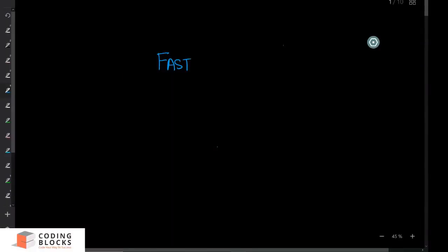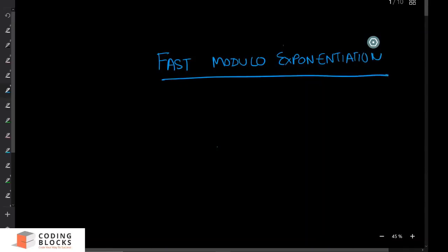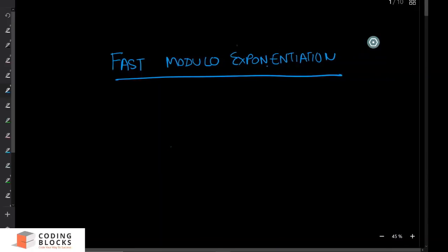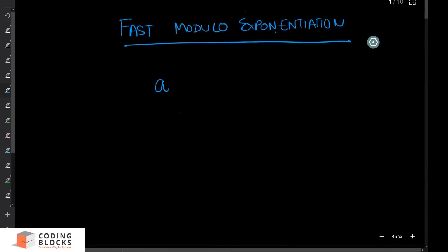In this video we are going to talk about fast modulo exponentiation, a concept used in many problems. Exponentiation basically means computing a raised to the power b, and sometimes you also need to take mod with some value m. The problem is to compute a raised to the power b mod m. The brute force approach is to multiply a by itself b times, which takes linear time.